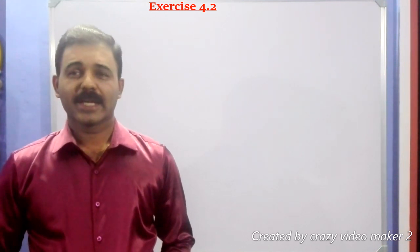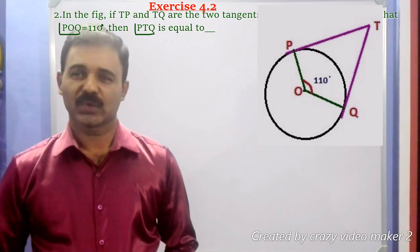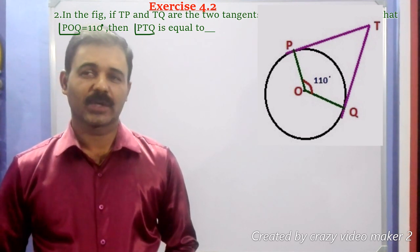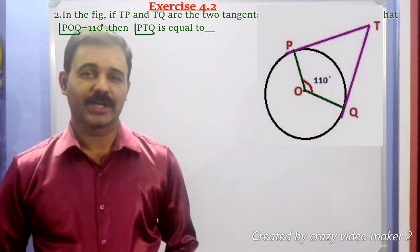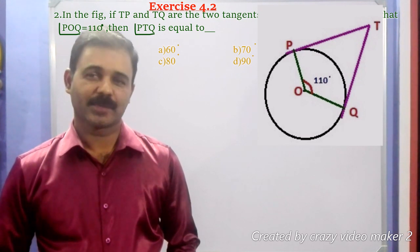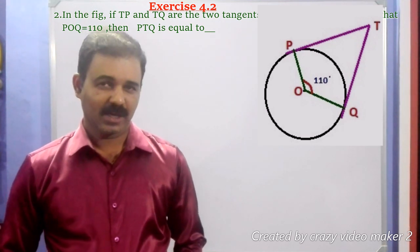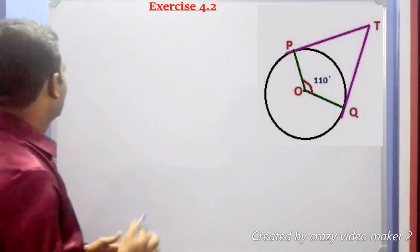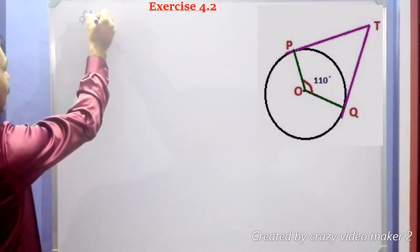Now taking the second problem. In the figure, if TP and TQ are the two tangents to a circle with center O such that angle POQ equals 110 degrees, then angle PTQ is equal to — given four options: option A, 60 degrees; option B, 70 degrees; option C, 80 degrees; and option D, 90 degrees.